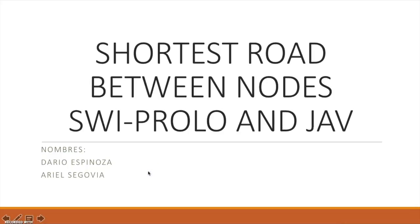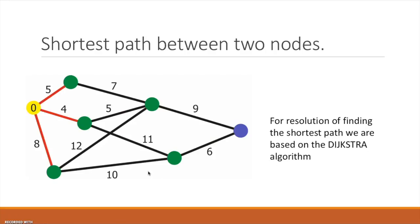Shortest route between nodes in Prolog and Java. The problem evaluates if a path from starting node A to destination node B can be traversed. It's necessary that connections exist between the nodes. For resolution of finding the shortest path...